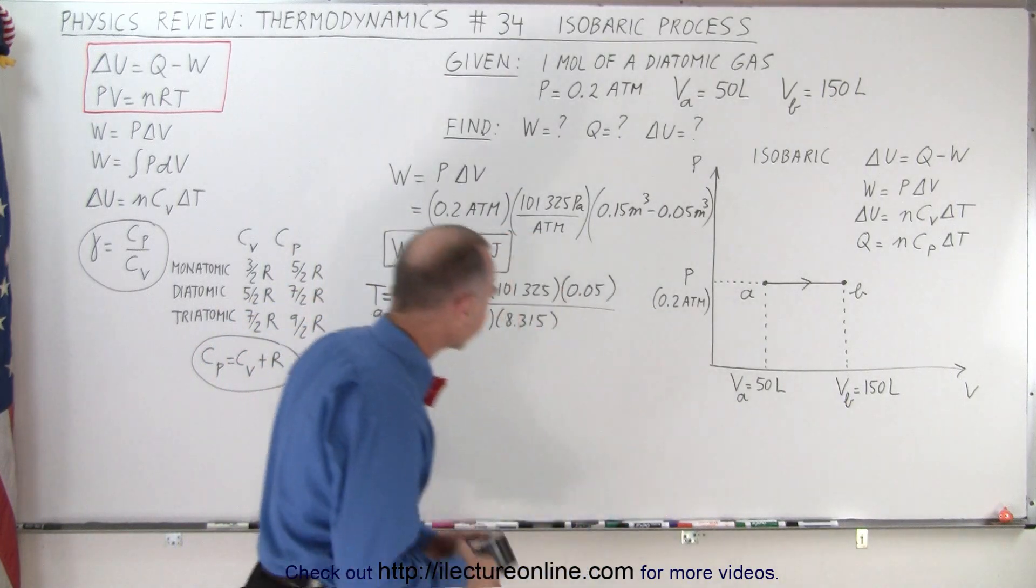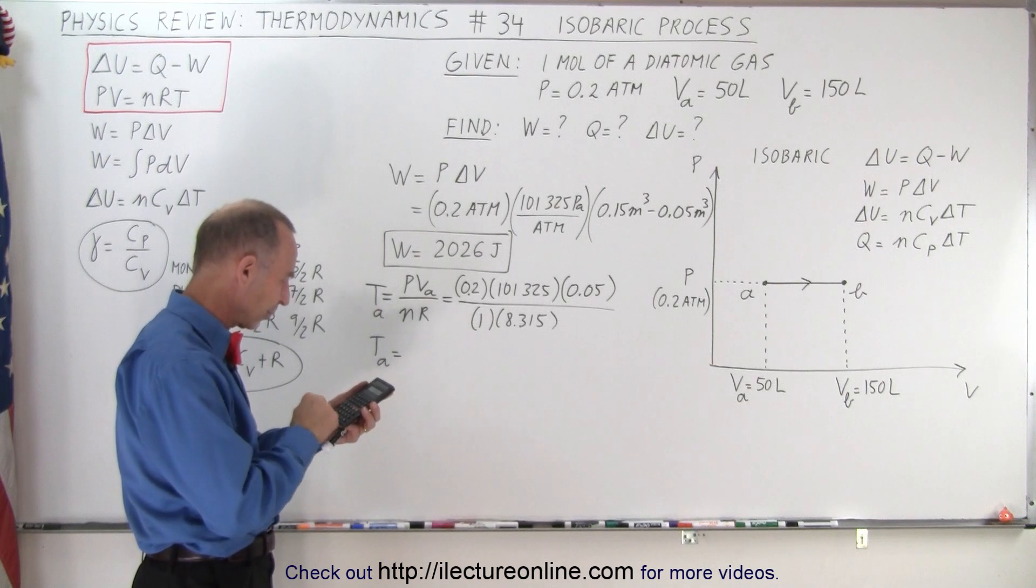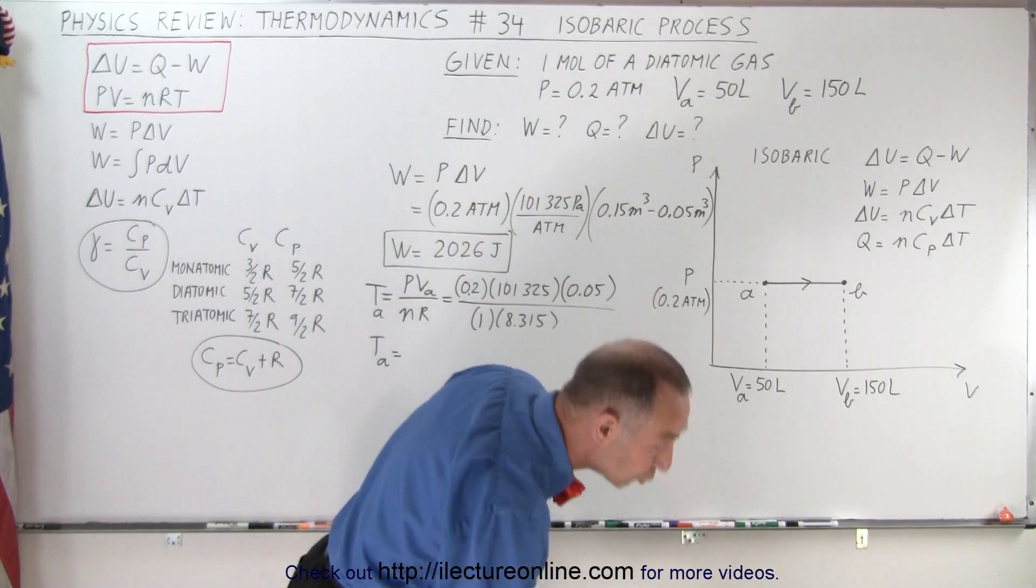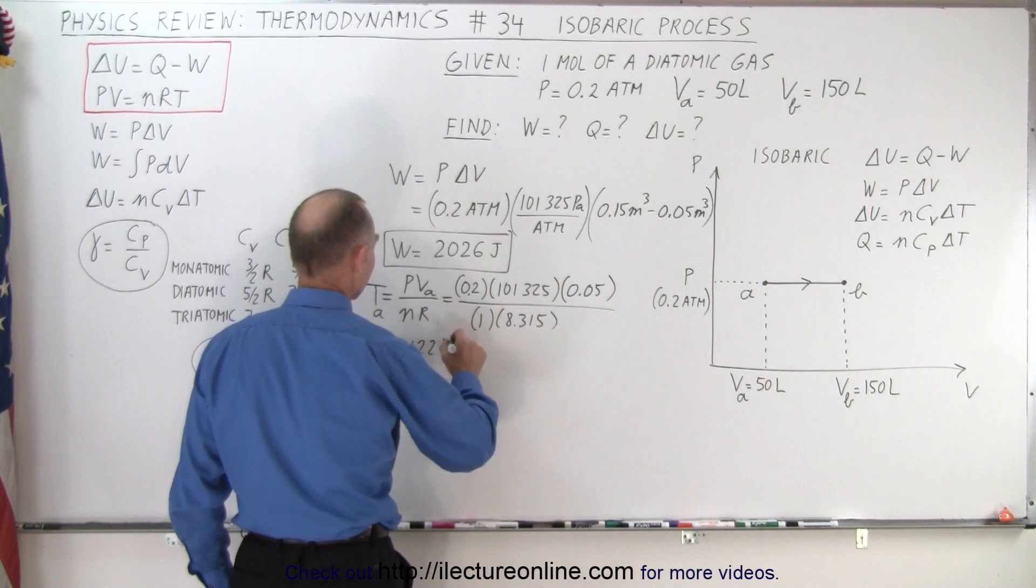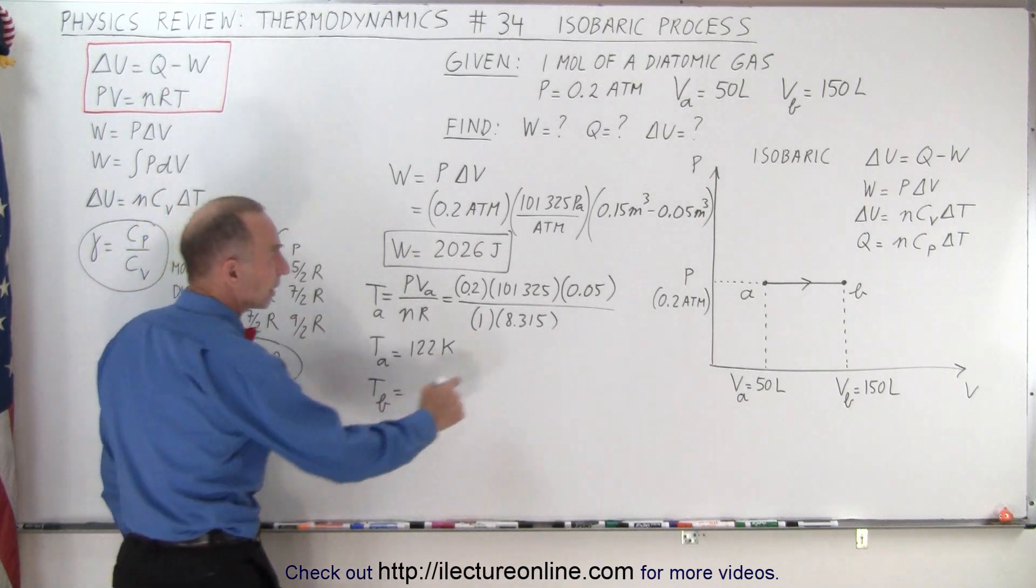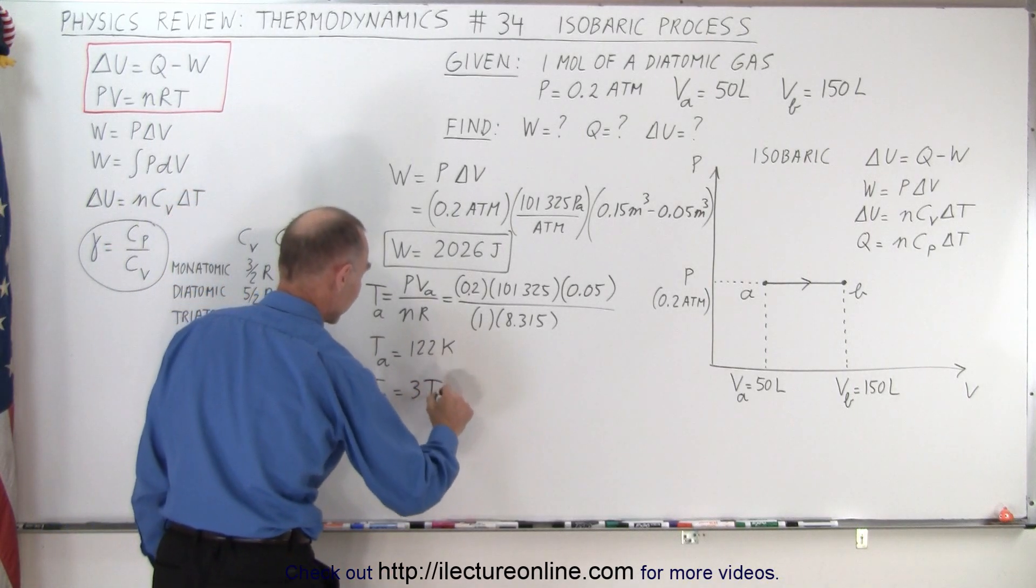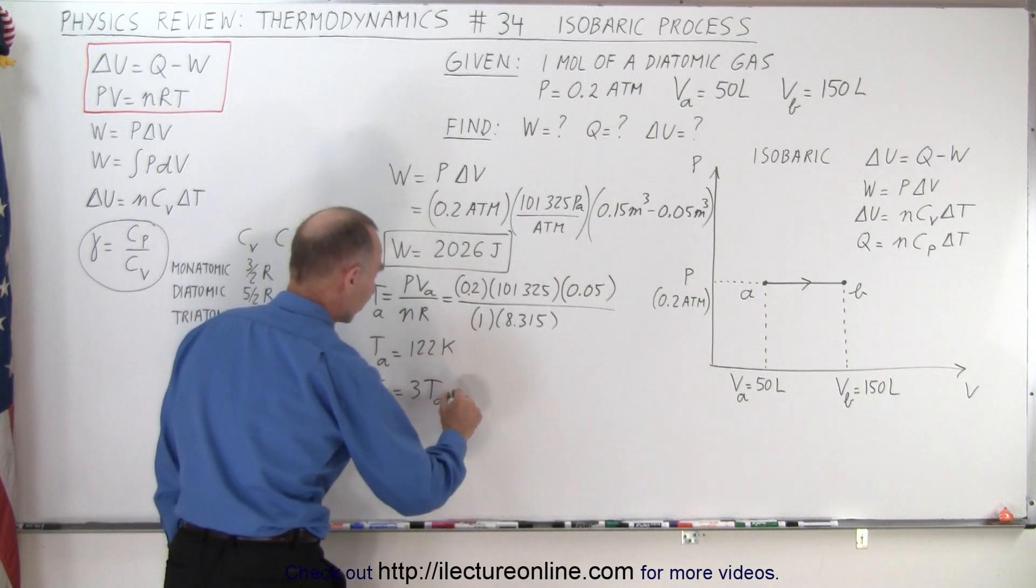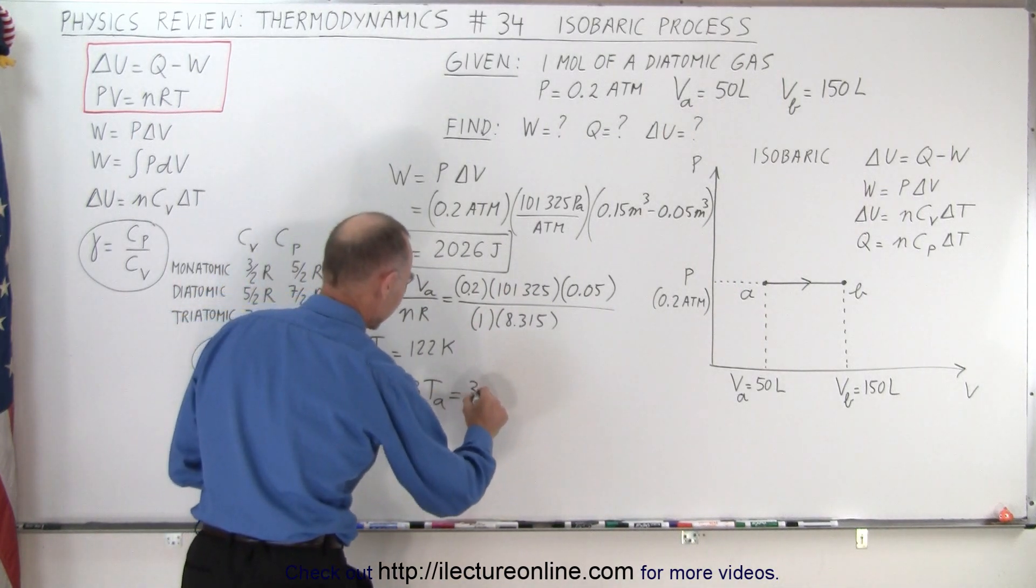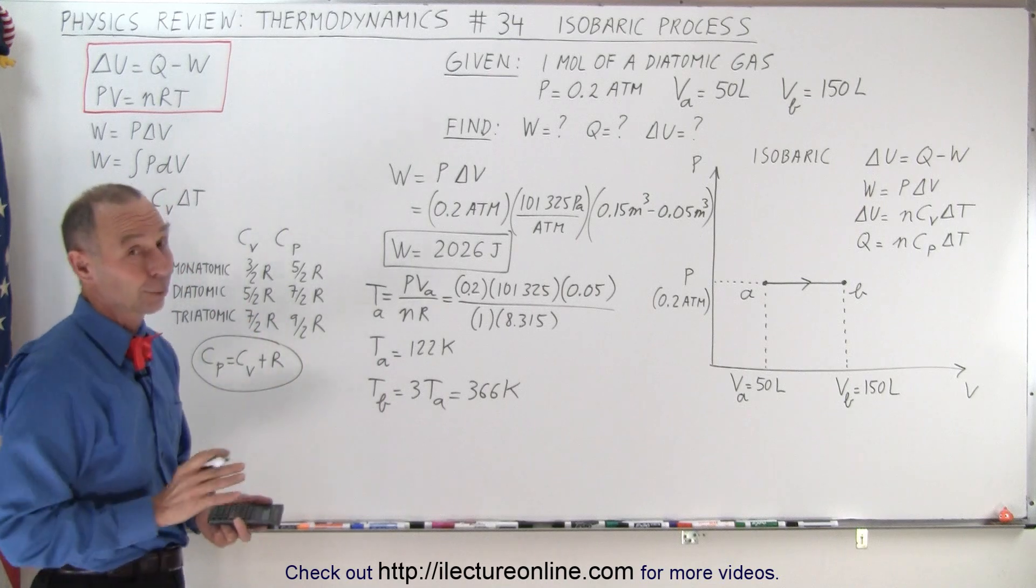Of course, for that, we need a calculator. 0.2 times 1.01325 times 0.05 divided by 8.315 equals 122 Kelvin. So what is the temperature at B? Notice that since we have three times the volume, the only thing that changes is that this goes from 0.05 to 0.15. Three times the volume means three times the temperature. So it would be three times the temperature at A, because everything else stays the same. That would be that number times three, which would be 366 Kelvin. I used my calculator to make sure I didn't have a roundoff error.